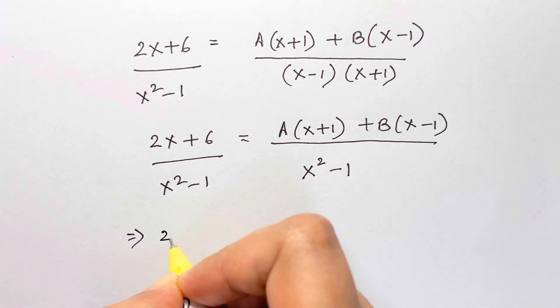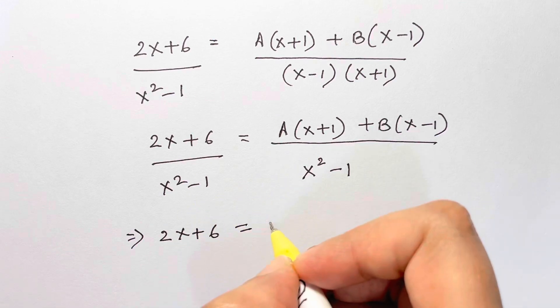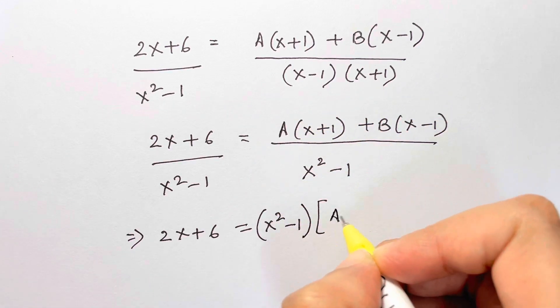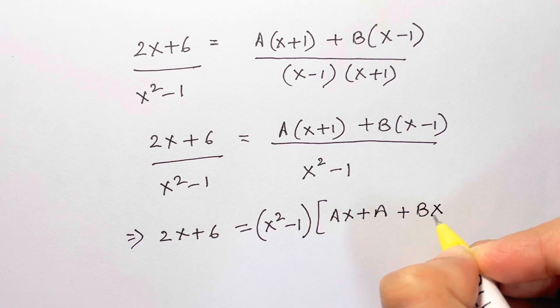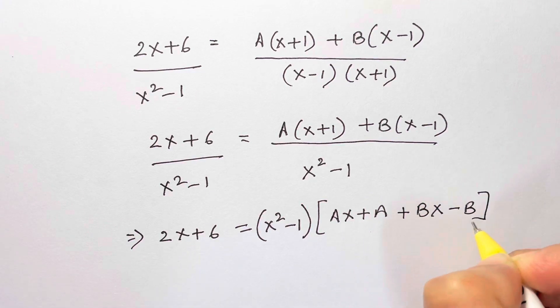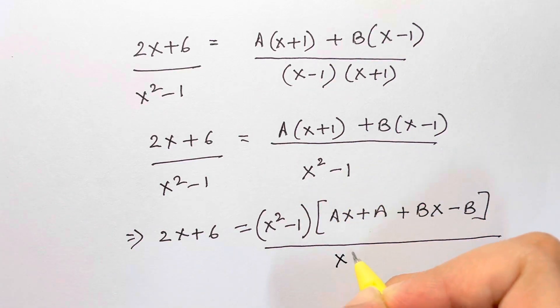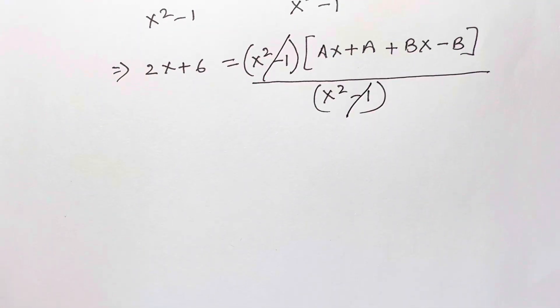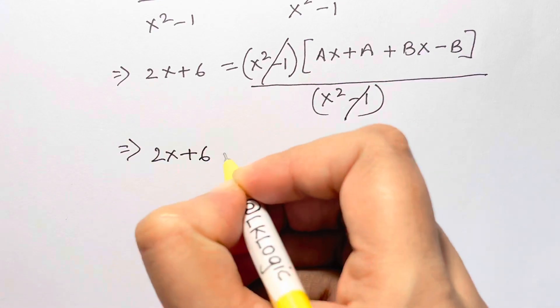So when I set at the other side, 2x plus 6 is equal to—I have x squared minus 1—and here I'm going to just multiply all of them: Ax plus A plus Bx minus B over x squared minus 1. So this and this gets cancelled.